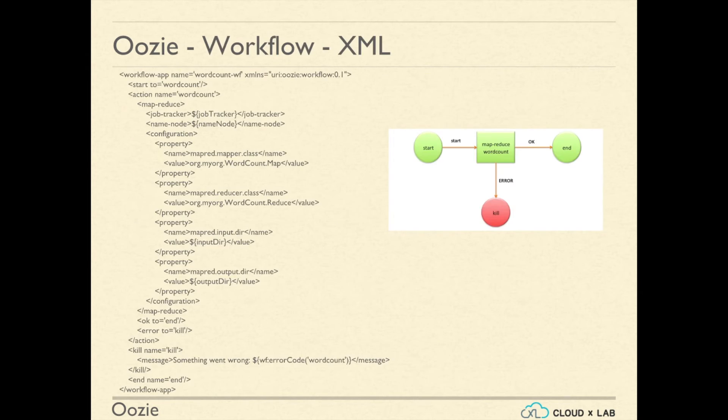We can define Oozie workflow in XML file. Let us see a sample XML for MapReduce operation. We define MapClass, ReduceClass, Input and Output directories in XML. We can configure similar workflows for other actions like Hive, Pig etc.